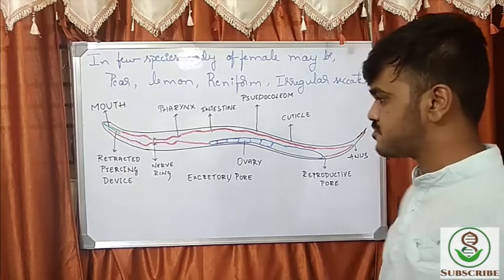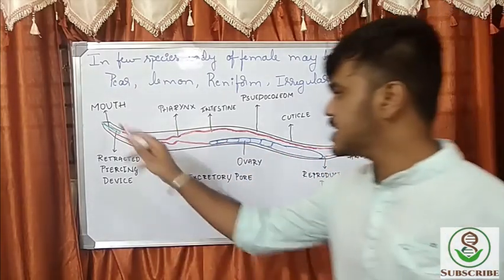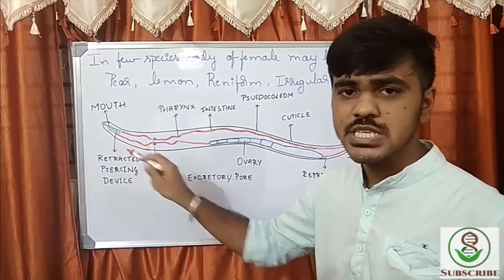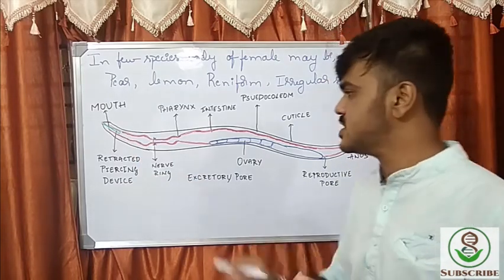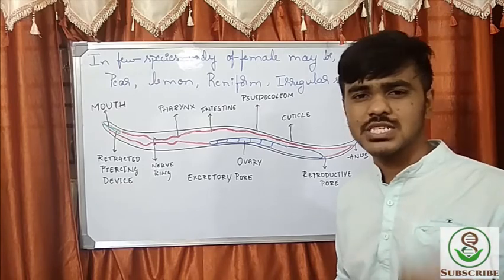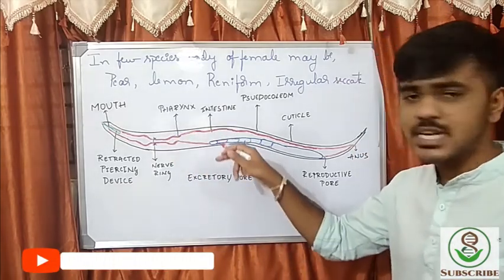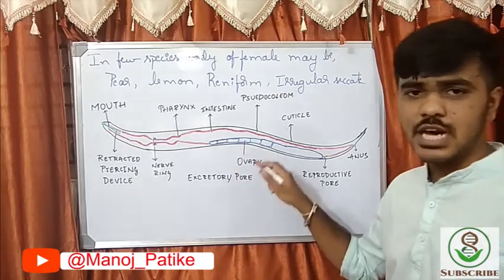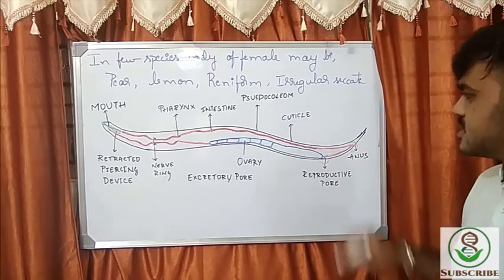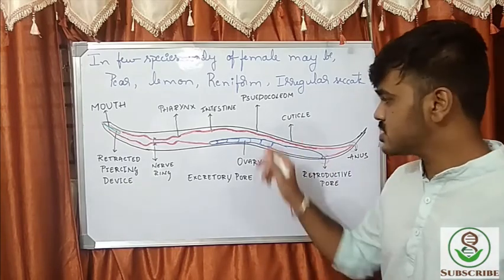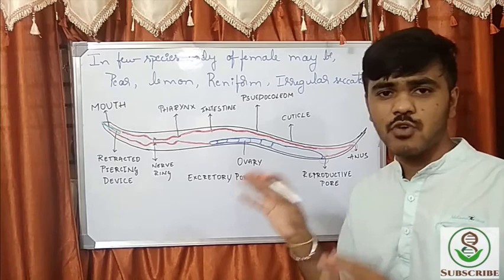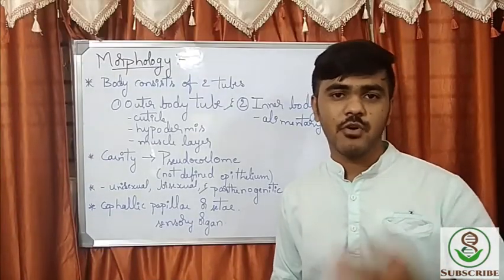Looking at the diagram of nematodes, this is the body structure with mouth parts. It has a retracted piercing device — the green part shown is a piercing organ from where it sucks nutrients. It has a nerve ring, and as a lower organism it has very low organizational structures. It has a pairing structure, intestine, ovary, reproductive organ, and reproductive pore. The outer layer is the cuticle, and the pseudocoelom occurs between the main digestive tract and the body wall.